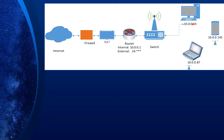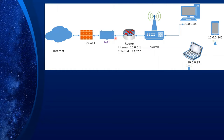If a device wants to talk to a service on the internet — let's say target.com on the other side of the world — the request goes through the switch, then to the router. The router has two IP addresses: one internal starting with 10.0.0.1 that shares the same network ID as the local devices, and one external starting with 24. That's how a router is able to connect different networks together — it has two or more interfaces. The router also has a NAT or Network Address Translation function. All the devices here use what are called private network addresses — those starting with 10, 192, and 172 — and these are considered private networks.